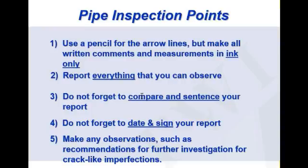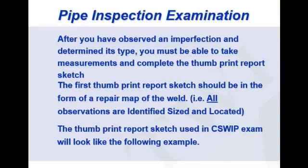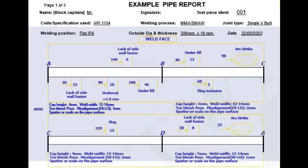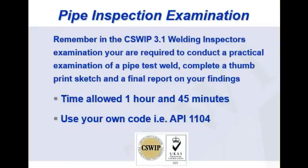Inspection point one: use a pencil for arrow lines, but make all written comments and measurements in ink only. For example, the arrow line pointing to a defect is drawn in pencil, but the label — such as 'lack of sidewall fusion' — must be written in ink.